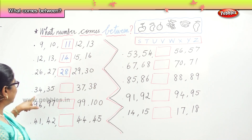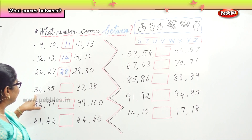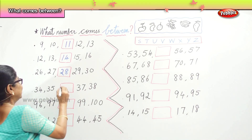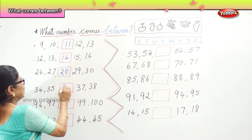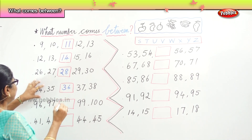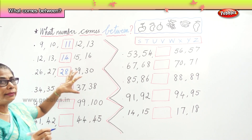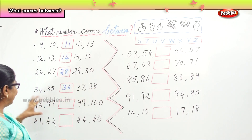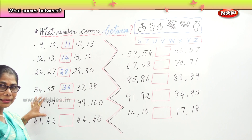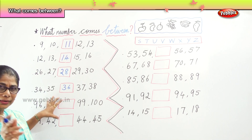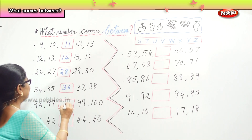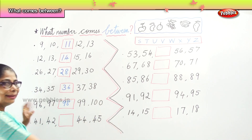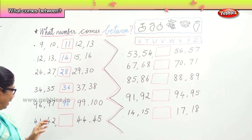Numbers in order, forward. 34, 35, __, 37, 38. Good — 36. So: 34, 35, 36, 37, 38. Next: 96, 97, __, 99, 100. Good — 98.